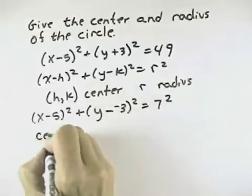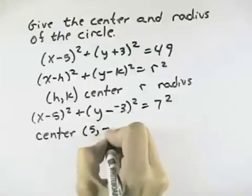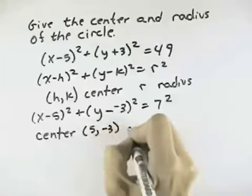So that allows us to read off the center point, which is h is 5 and k is negative 3, and read off the radius is the square root of 7 squared, which is then 7.